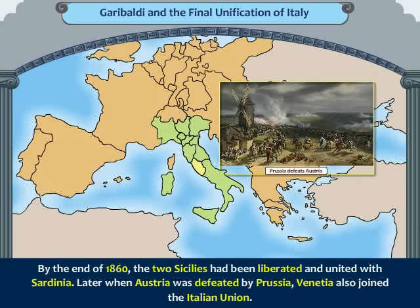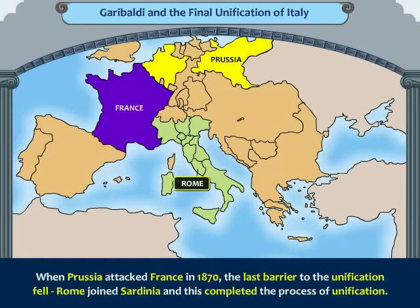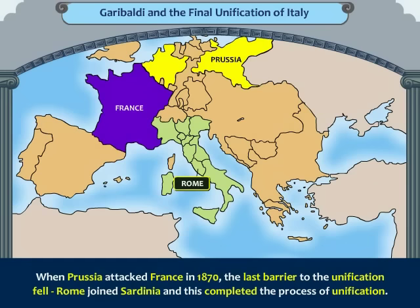Later, when Austria was defeated by Prussia, Venetia also joined the Italian Union. When Prussia attacked France in 1870, the last barrier to the unification fell. Rome joined Sardinia and this completed the process of unification. Nationalism had triumphed. In July 1871, Rome became the capital of a unified Italy, headed by King Victor Emmanuel II.